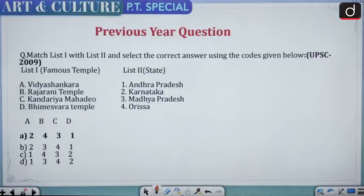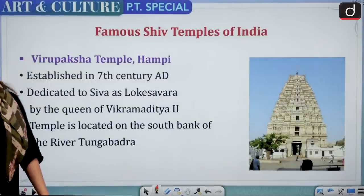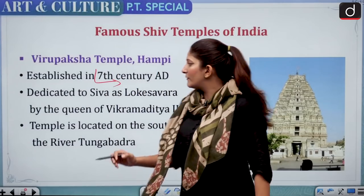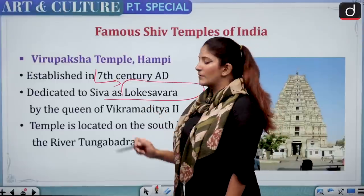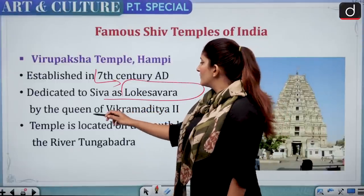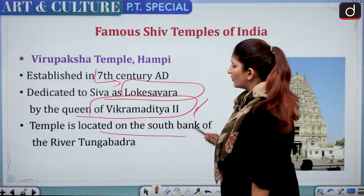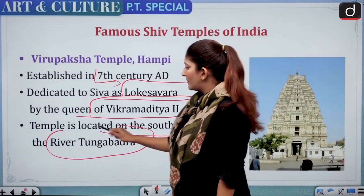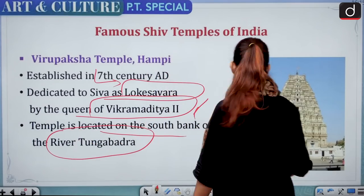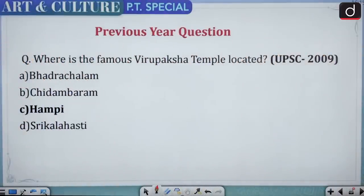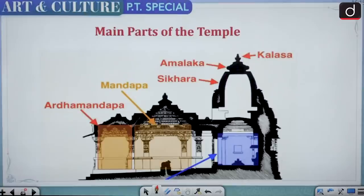Virupaksha Temple of Hampi was established in the 7th century AD. It is dedicated to Lord Shiva, known as Lokeswara, and was built by the queen of Vikramaditya. The temple is located on the south bank of the River Tungabhadra. A previous UPSC 2009 question asked where the famous Virupaksha Temple is located — the correct answer is Hampi.